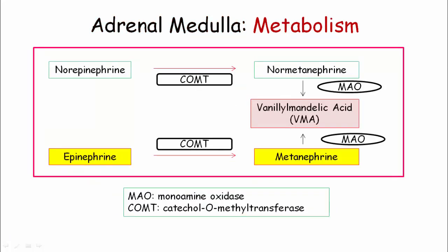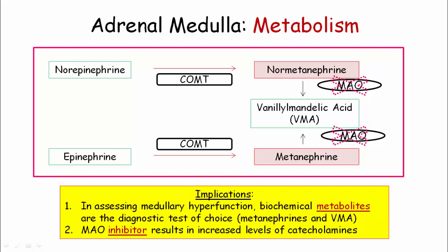The last tidbits you need before launching into our discussion of pheo and MEN2 is catecholamine metabolism. When evaluating a patient for hyperfunction of the adrenal medulla, we do not directly measure the hormone products. Instead, we measure the breakdown products, including metanephrine and vanillylmandelic acid, better known as VMA. Metanephrine can be measured in the plasma or urine, whereas VMA is measured in a 24-hour urine collection. MAO inhibitors interfere with catecholamine breakdown and can precipitate hypertensive crisis.